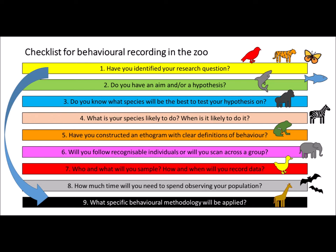Whether you record behaviour individually or as a group will influence the type of behavioural recording and sampling you use and how you gather your data. When you have sampled your data and worked out when you're recording, you need to think about how much time you will actually spend observing your population. Are the behaviours commonplace or are they rare or infrequent events? At what time of day or season do they occur? All of these things will influence the overall experimental design that you implement, and you will then be able to work out the specific behavioural methodologies that you will apply.